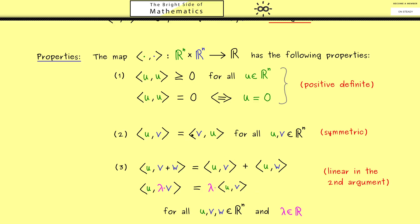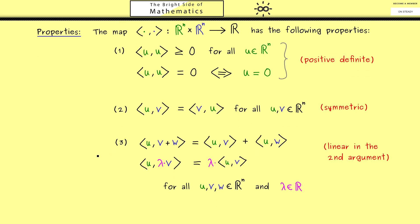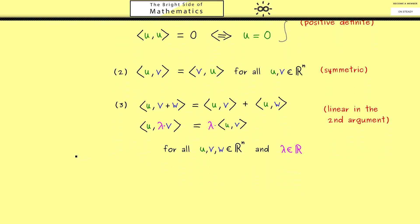In summary, these are the important properties of our standard inner product: positive definite, symmetric, and linear in the second argument. This helps us to measure angles as we saw with orthogonality. In addition it also allows us to measure lengths, and this leads us to the next definition: the definition of a norm.